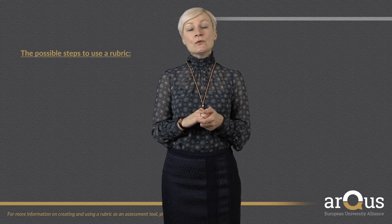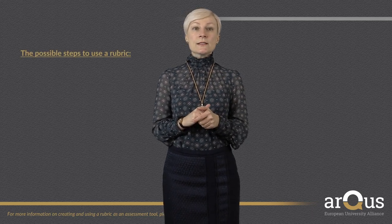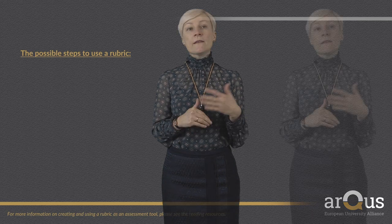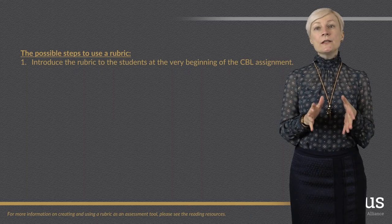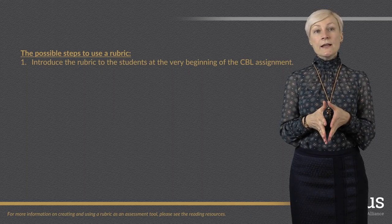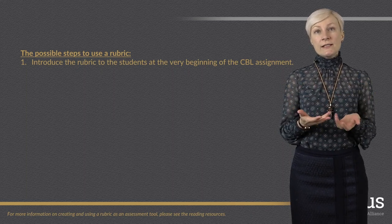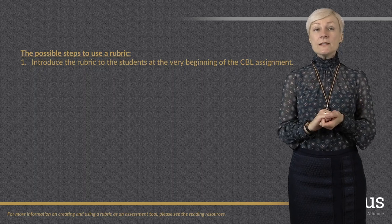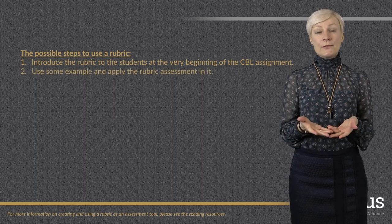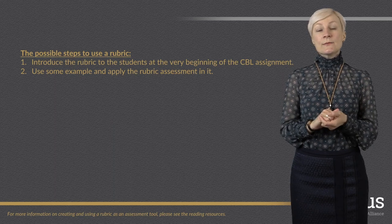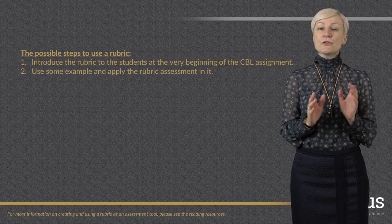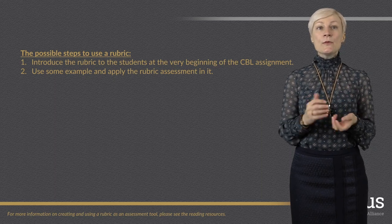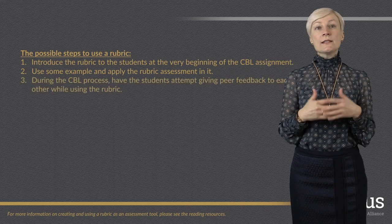Feedback should be given to the student to explain what level they have achieved, why, and what they need to do to progress. The possible steps to use a rubric are: introduce the rubric to students at the very beginning of the CBL assignment, explain the characteristics and performance levels, then apply the rubric to an example.